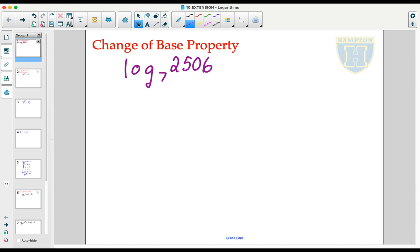It's just that 10 and e are the most popular of all of the bases. The change of base property uses these two numbers, the original base and the input of the logarithmic expression, as the inputs of two new logarithms for the purposes of evaluation.